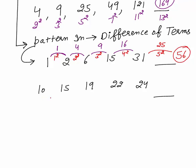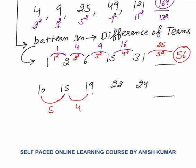Another example: 10, 15, 19, 22, 24. The differences are 5, 4, 3, 2 — decreasing by 1 each time. So the next difference would be 1, making the next term 24 plus 1, which is 25.